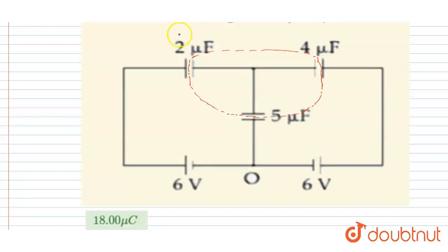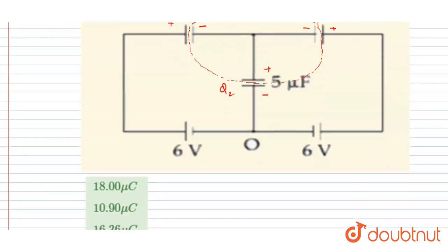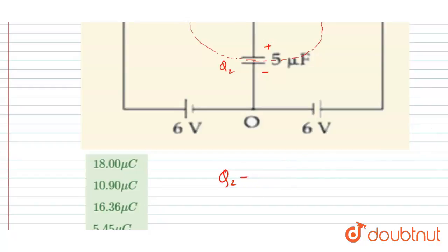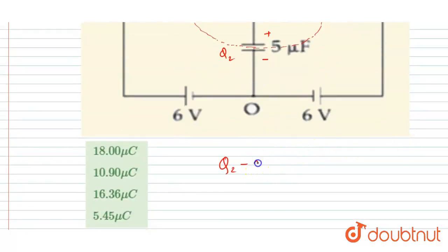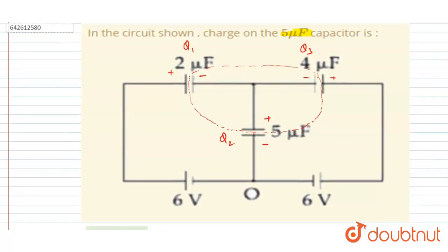Let's say the charge on the 2 microfarad capacitor is q1, the charge on this is q2, and this is q3. This plate will be negatively charged and this plate will be positively charged — negative, positive, negative, positive, negative. So the total charge on these three plates: plus q2 minus q1 minus q3 equals zero, so q2 equals q1 plus q3.